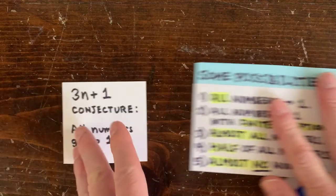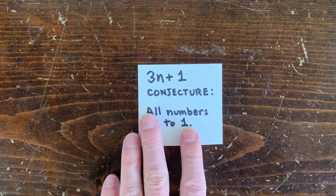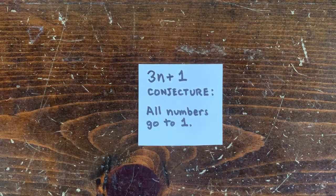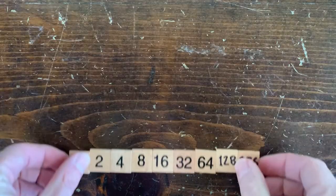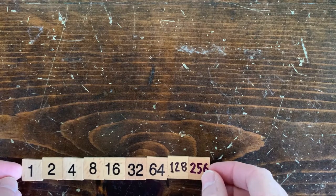Back to the 3n plus 1 conjecture though, come on. It can't be true that almost no numbers go to 1. So, let's act like a census taker and start counting the numbers that go to 1. We might not get all of them, but maybe we can get most of them.